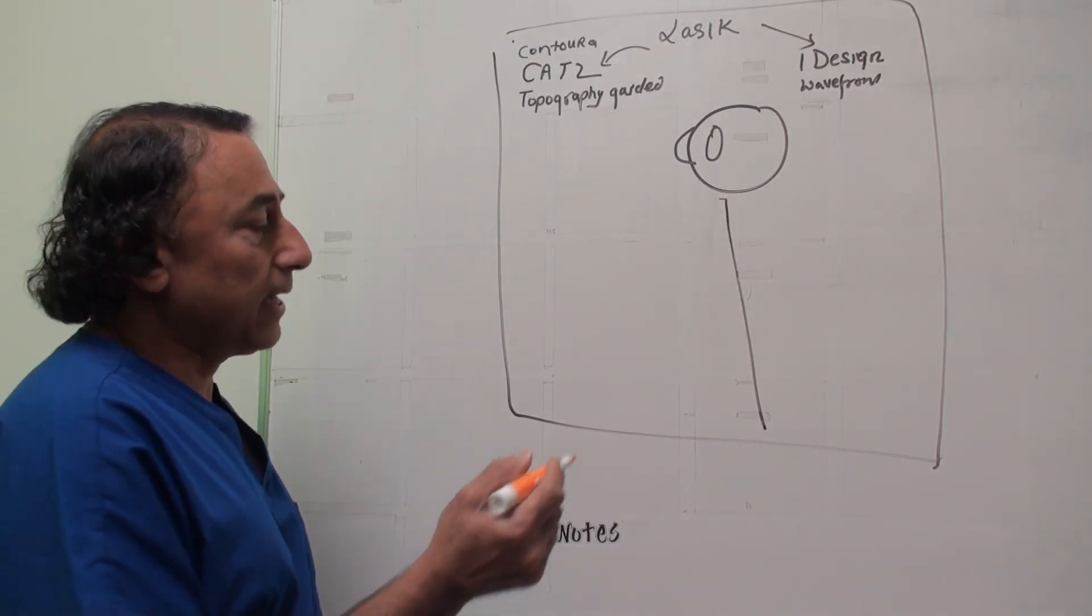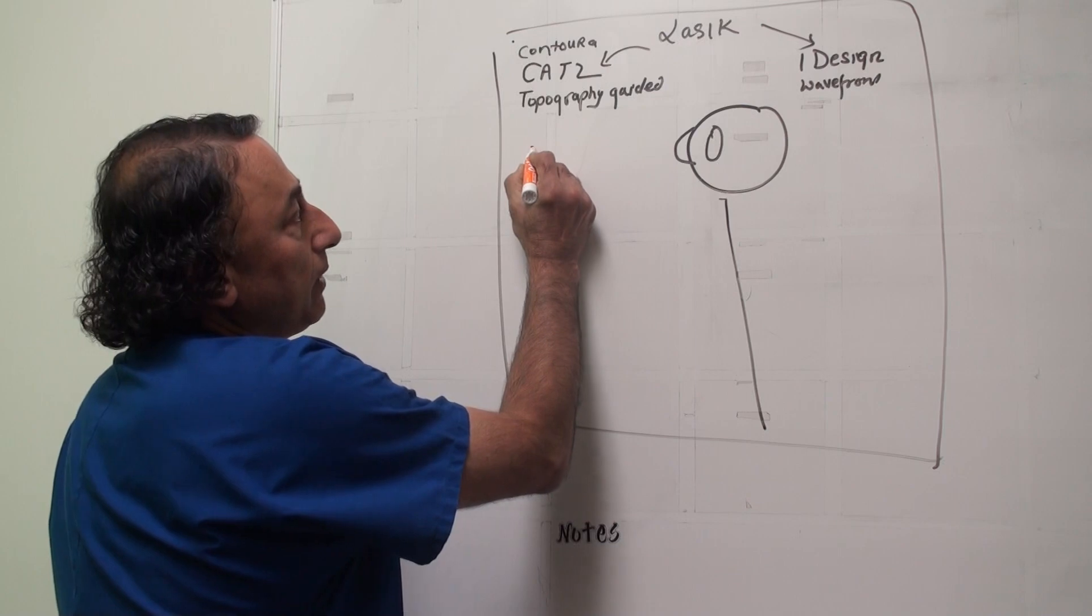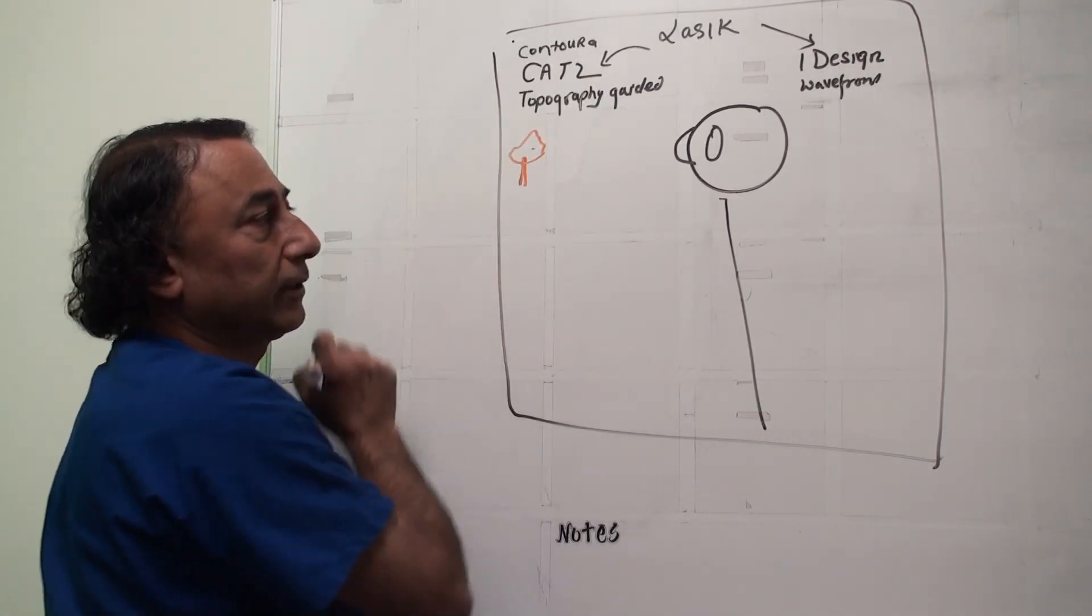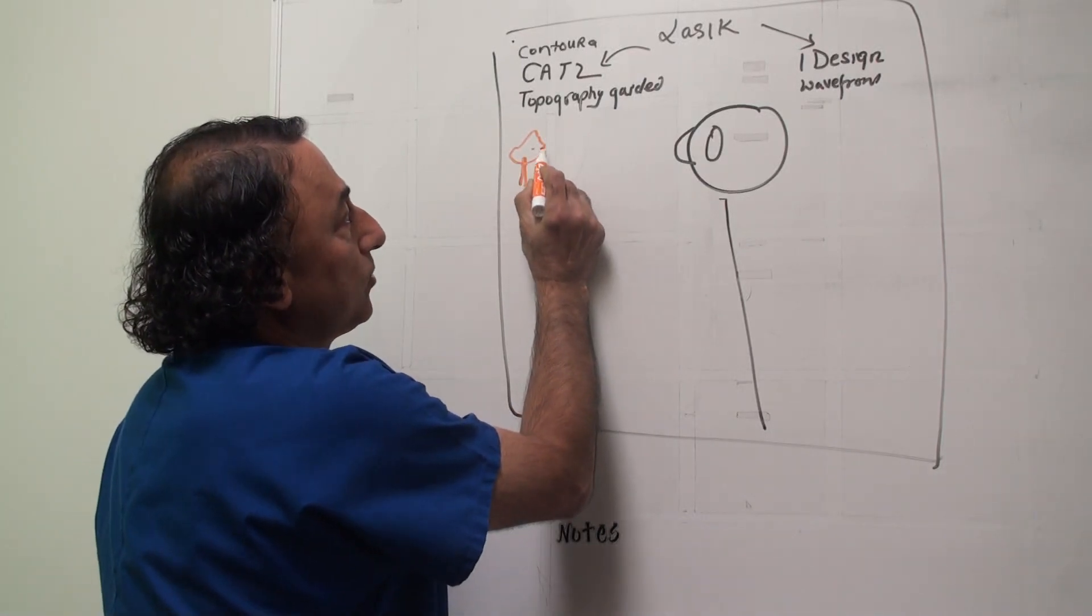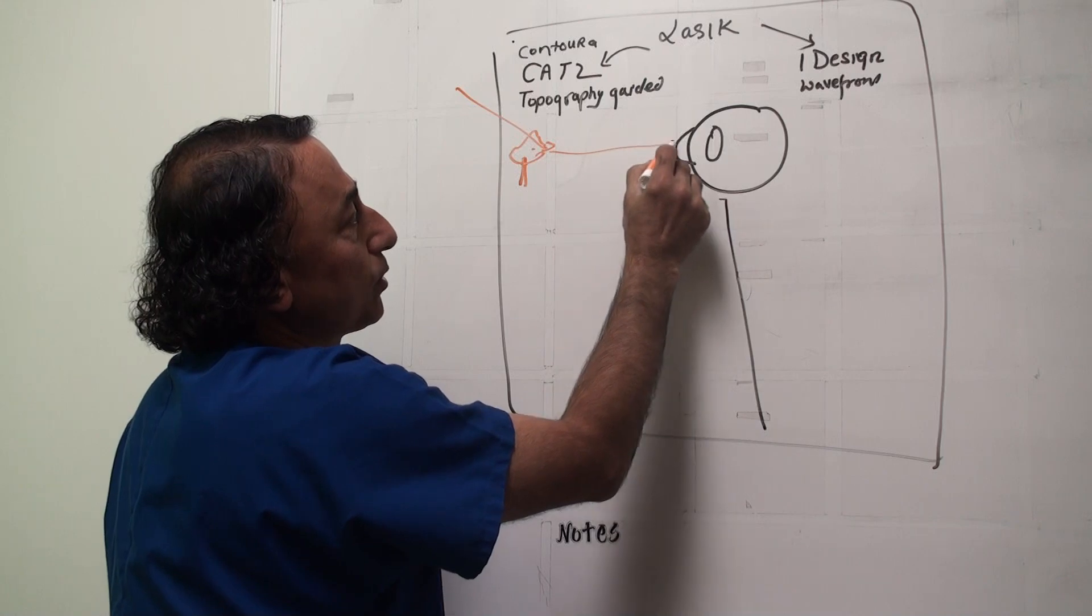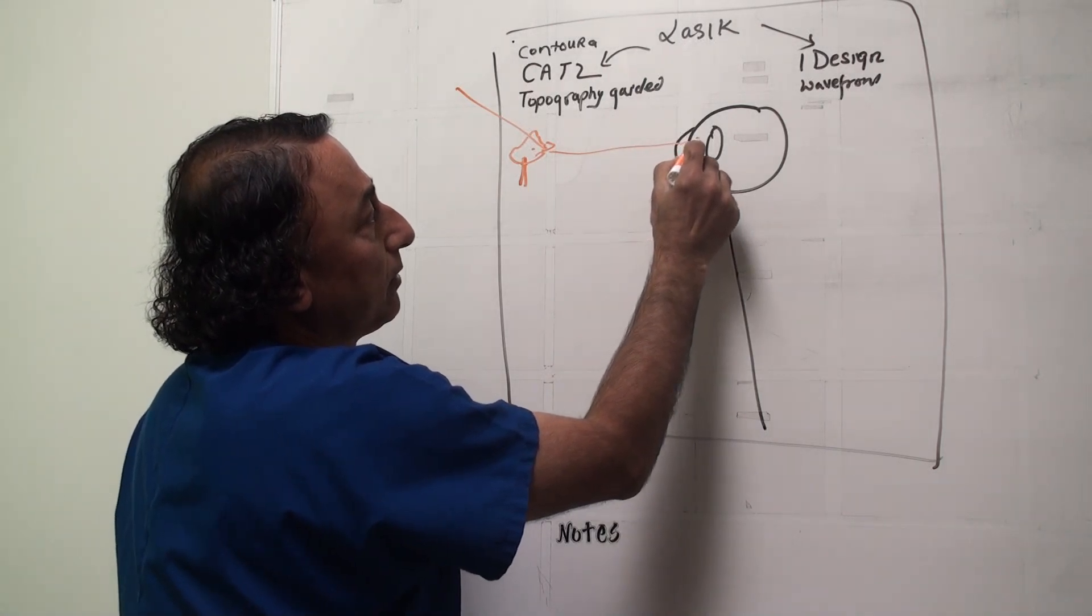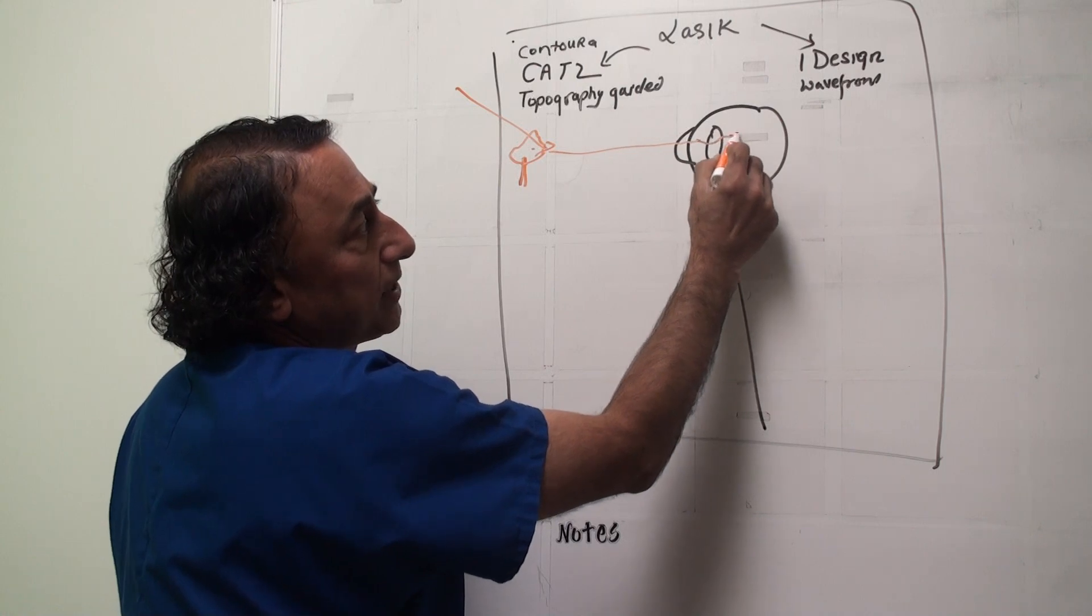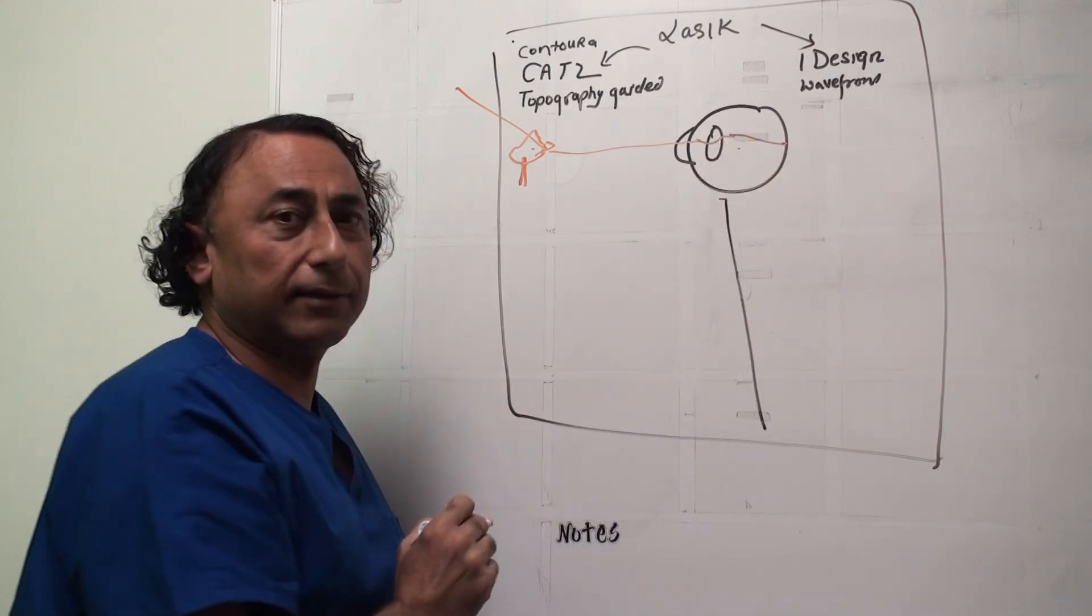When we look at something, let's say a tree, light from the sun gets reflected, goes through the cornea, through the liquid in the front, lands in the vitreous jelly, and finally hits the retina.